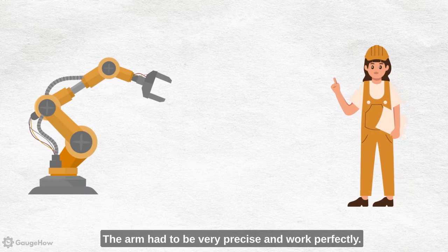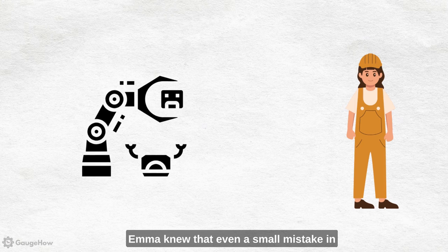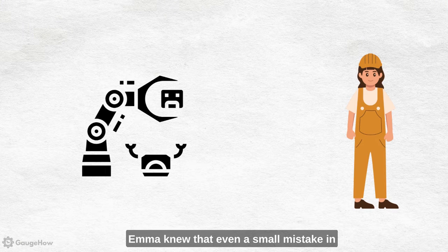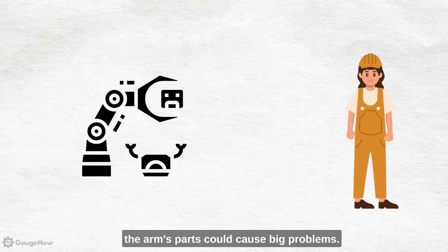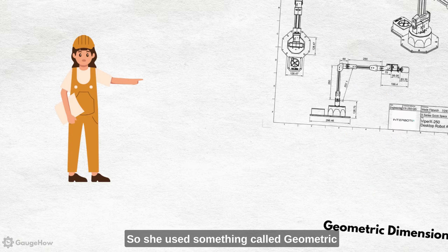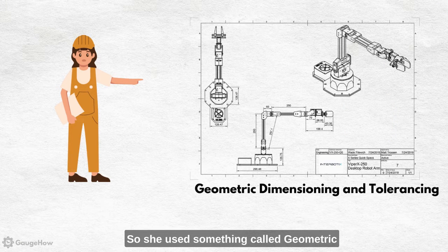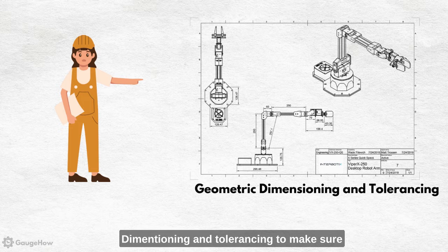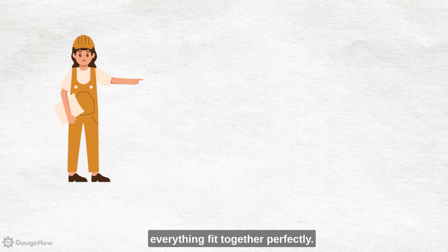The arm had to be very precise and work perfectly. Emma knew that even a small mistake in the arm's parts could cause big problems.